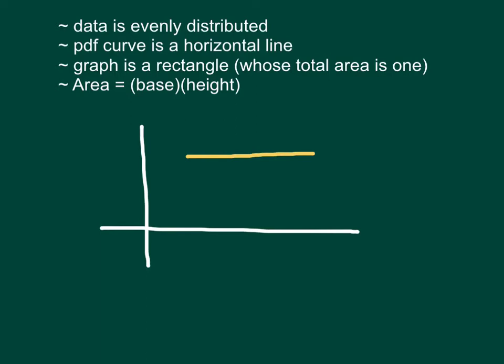And the PDF curve goes from the minimum to the maximum value which will usually be stated in the problem. And so if you draw the shape under the curve, the graph is a rectangle whose total area is one.